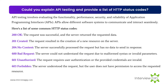First question: could you explain API testing and provide a list of HTTP status codes? API testing involves evaluating the functionality, performance, security, and reliability of application programming interfaces. APIs allow different software systems to communicate and interact seamlessly. Common HTTP status codes include: 200 OK — the request was successful and the server returned the requested data. 201 Created —